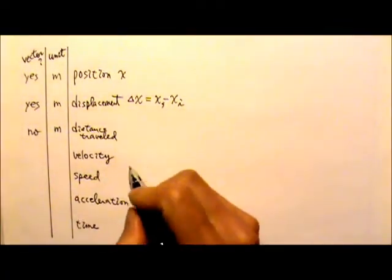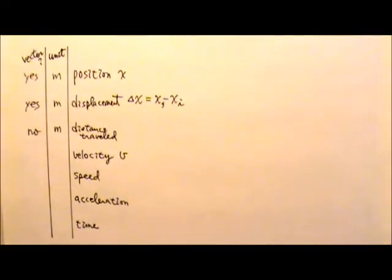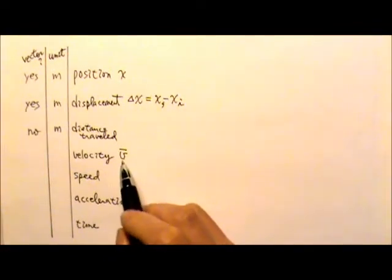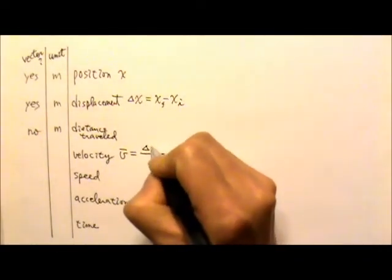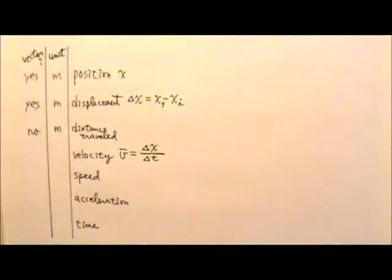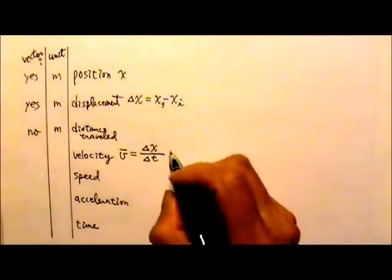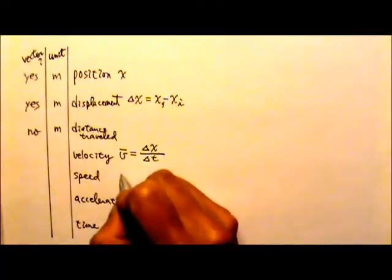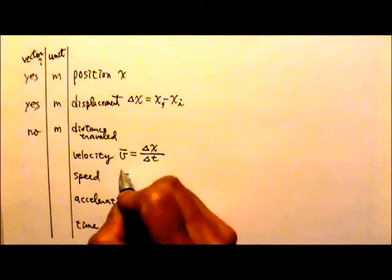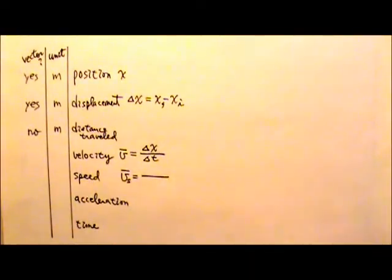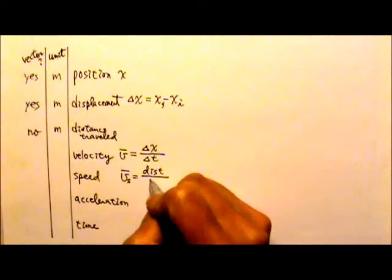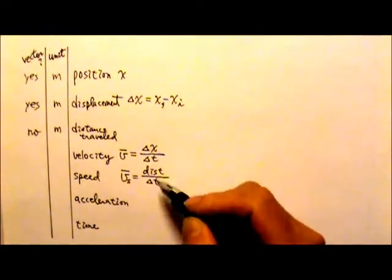Now let's look at velocity. We use the letter v for velocity; a bar on top means it's an average value. Average velocity is defined as the change in position divided by the change in time: delta x over delta t. For speed, some books use v-sub-s. Average speed is the distance traveled divided by the change in time.